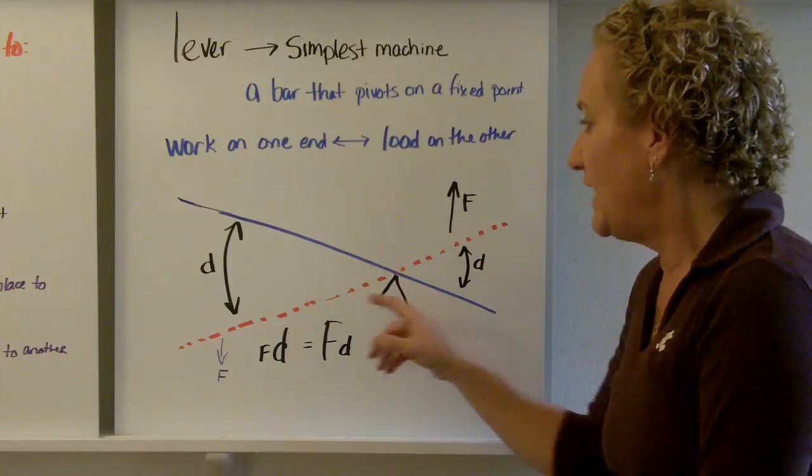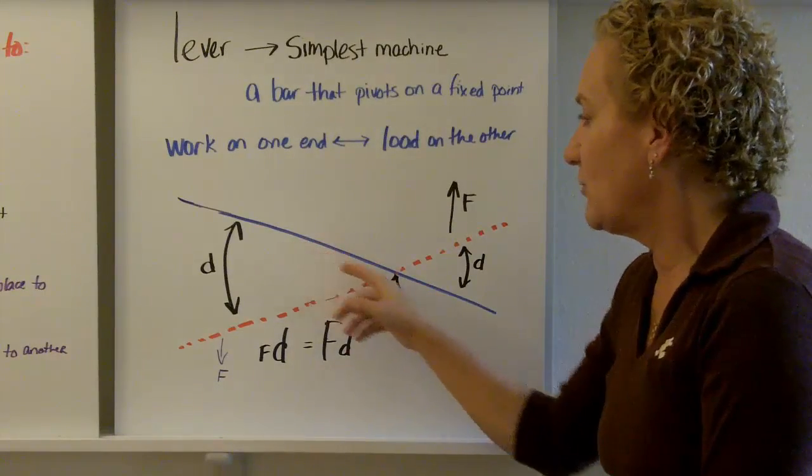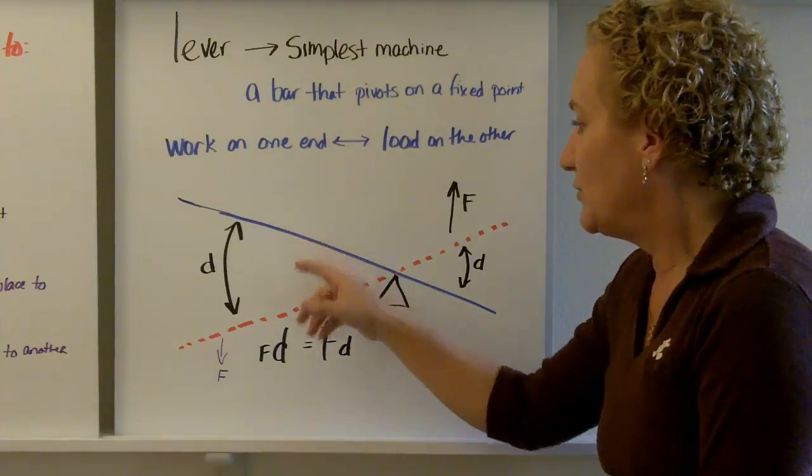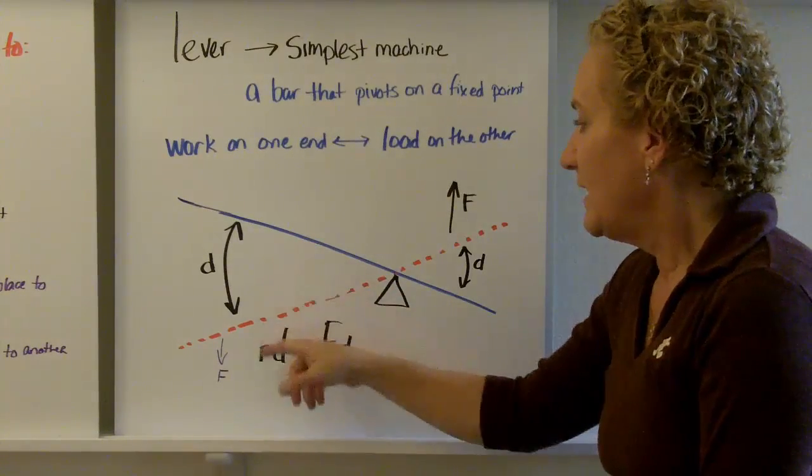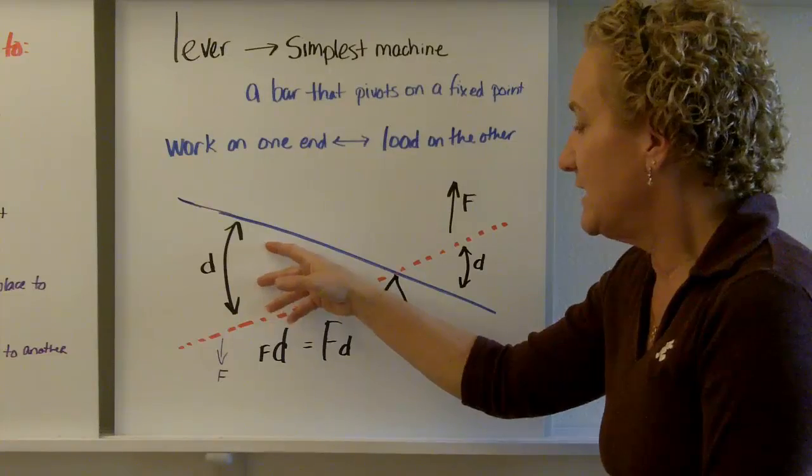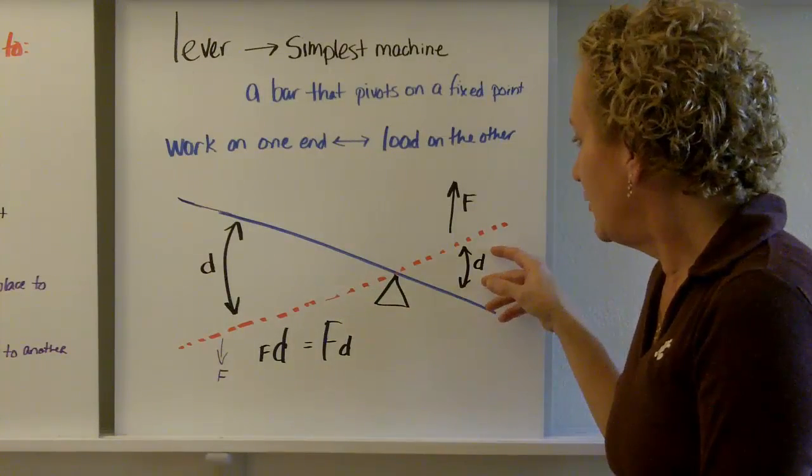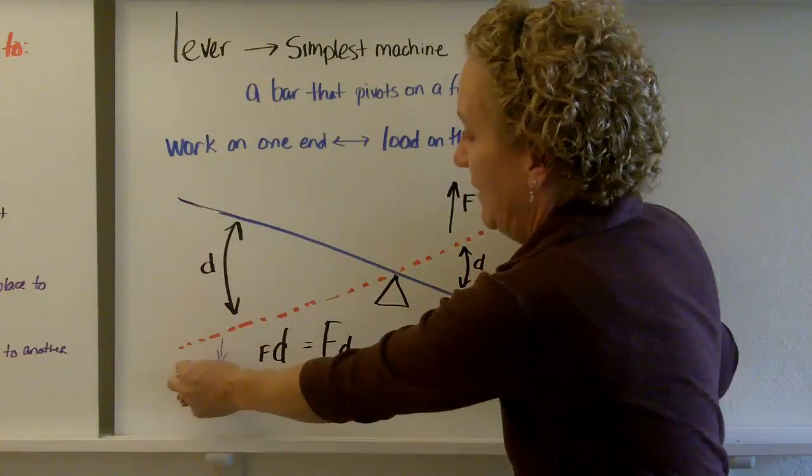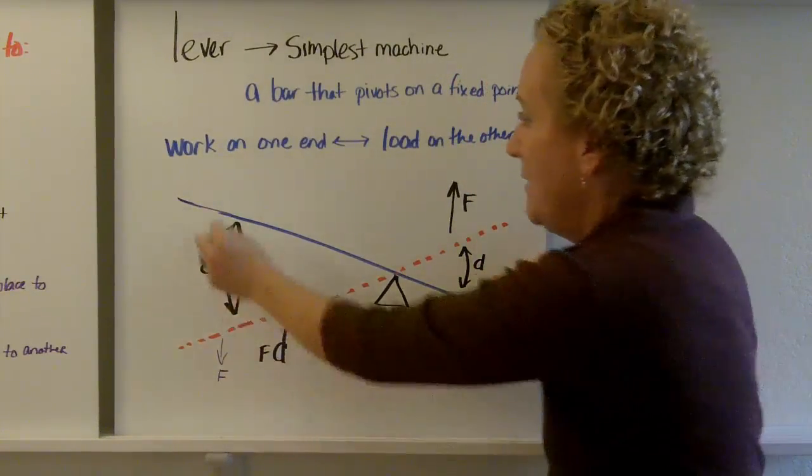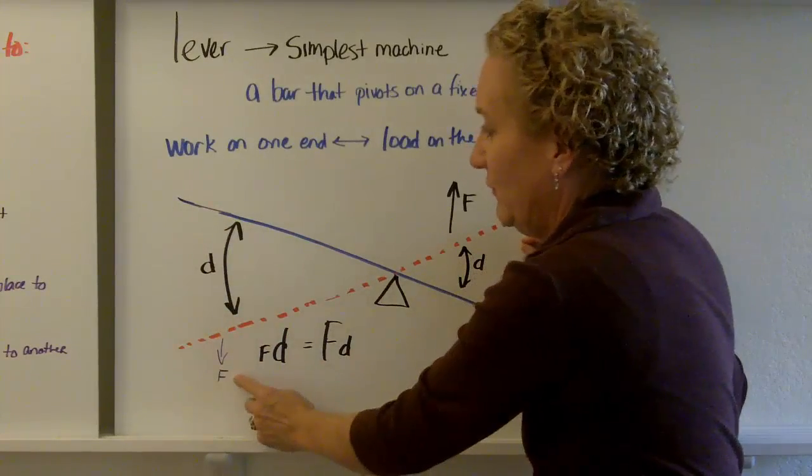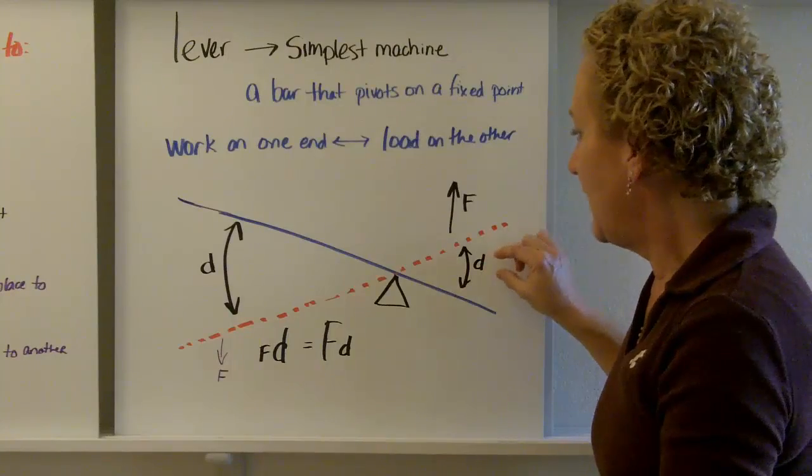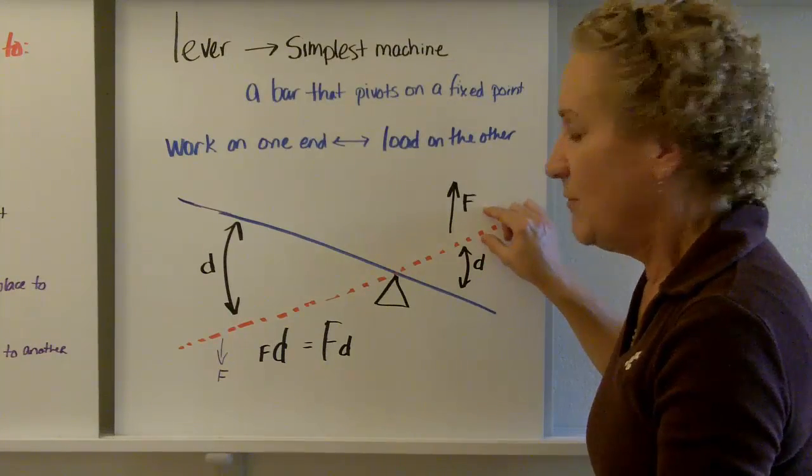We've got the blue line and the red dotted line. So, let's say we start with the blue line, and we're going to actually push down on the blue line, and it's going to go a big distance. On this side, it just moves up a little distance. So, let's pretend like you pivot. You push down on this side, and it becomes the red line, okay? Just want to make sure you understand what's going on. So, we push down here with a little force, and we move it a big distance.